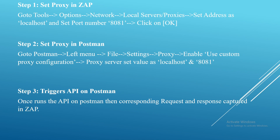These are the steps we need to follow in order to perform the security testing. Step 1 is set the proxy in ZAP. For that, go to Tools, then Options, then the Network tab, and take Local Servers and Proxies. Set the address as localhost and set the port number as 8081 and click OK. The proxy setup on ZAP is completed.